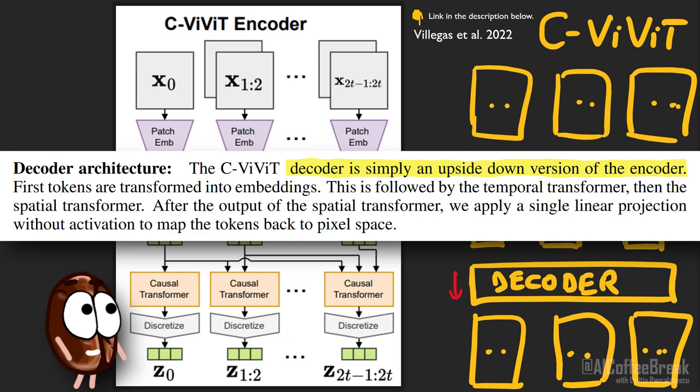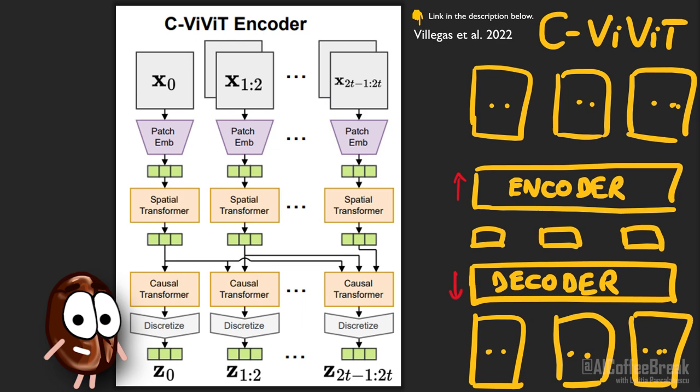So now we have explained CViViT, trained on lots of video and images, that has learned something about the visual world and can map video to lower dimensional vectors that hopefully capture the semantics of the video — because we need these semantic video embeddings to work with them in the actual text-to-video generation transformer, MaskGit.